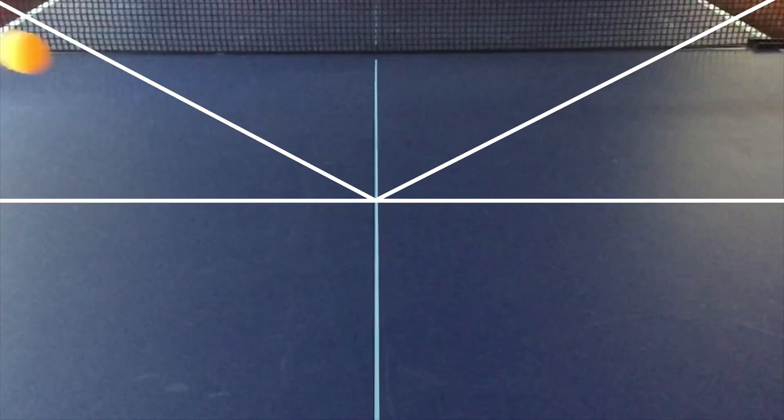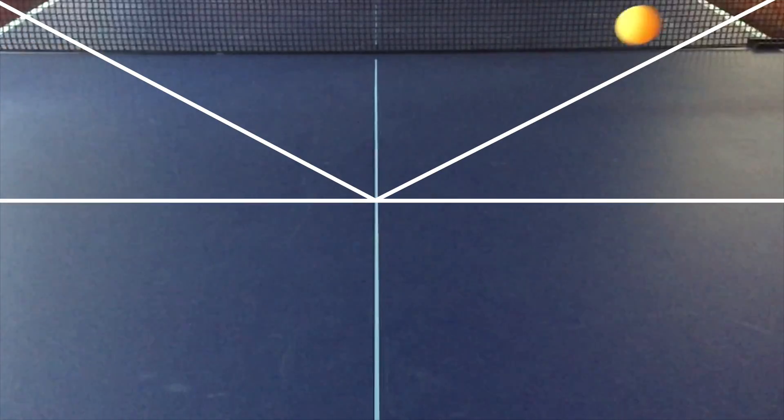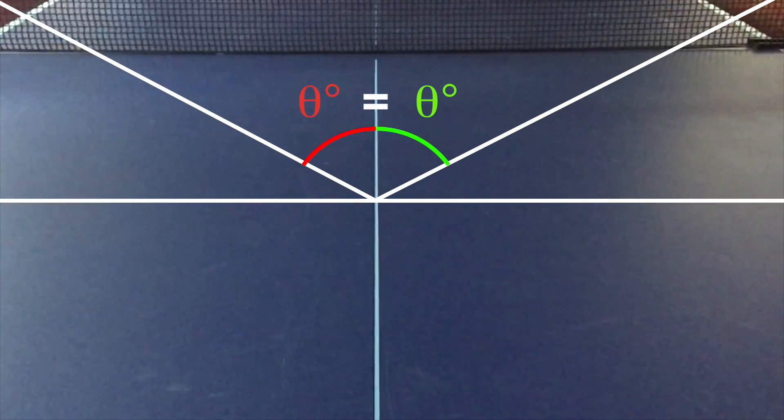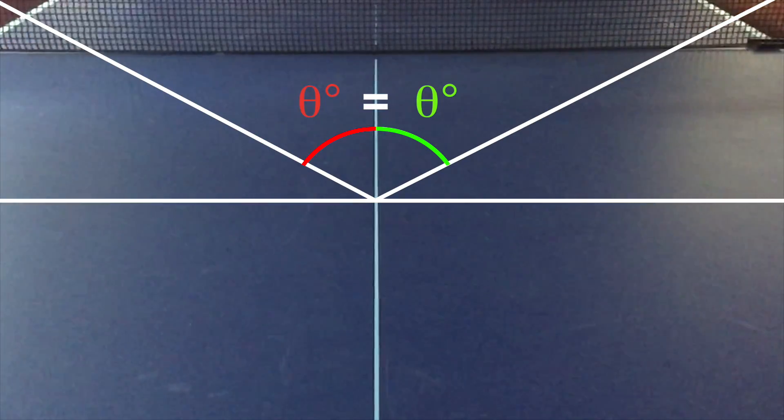This seems pretty intuitive. Anyone who's played ping pong expects the ball to bounce off the table at more or less the same angle that it hits the table. However, to delve into the reason for the law of reflection, we have to turn to a couple of famous physicists for help.